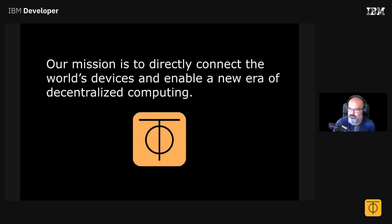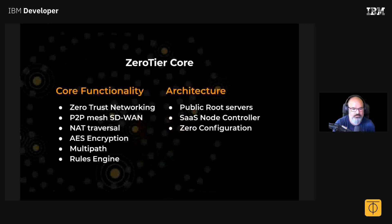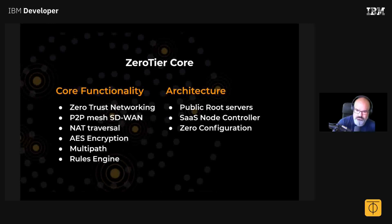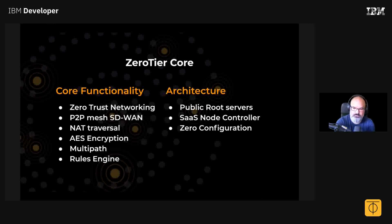We now have this buzzword: zero trust networking — and we're happy about that. Our project is about eight years old; people started saying 'zero trust' about two years ago. What we have is a peer-to-peer mesh SD-WAN. It can do NAT traversal, so if you install ZeroTier on your laptop and I install ZeroTier on my laptop, both of us behind NAT devices, our devices can talk directly on the fastest possible path. Every packet is encrypted. We also support multi-path — so if you're tethering off your phone and also have Starlink, ZeroTier can pick the better path.